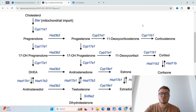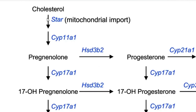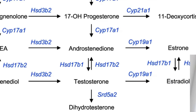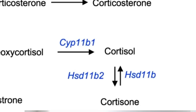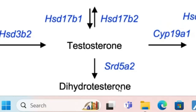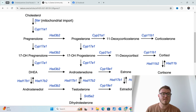So this chart shows the way your body synthesizes different hormones. You've got testosterone down here, cortisol over here, DHEA over here, estradiol, estrone, dihydrotestosterone. This is the process your body uses to make all of your steroid and sex hormones.